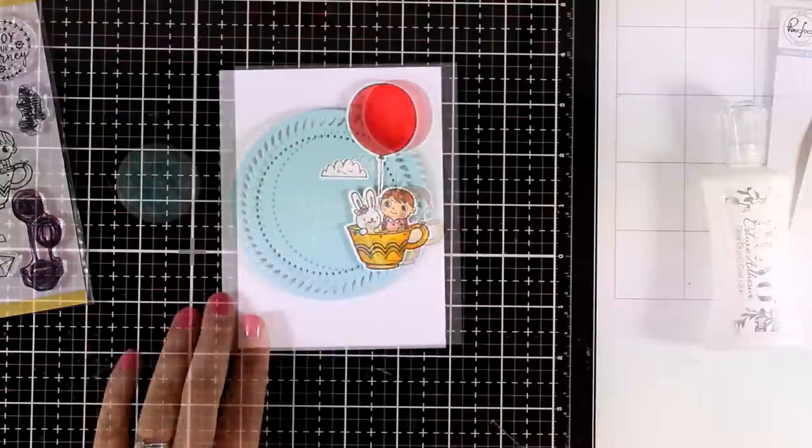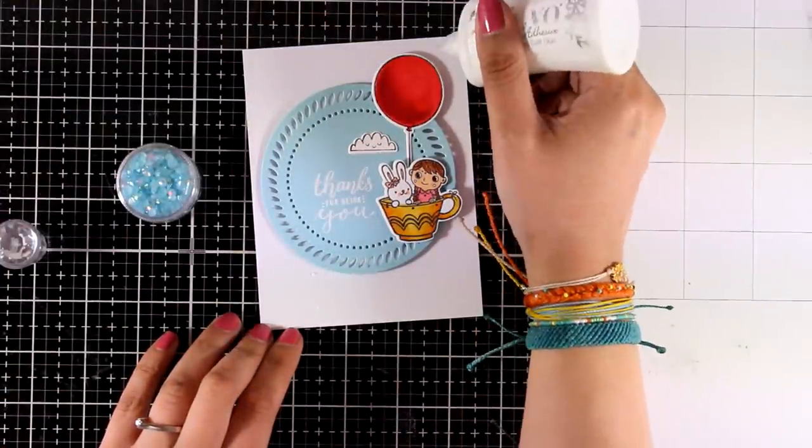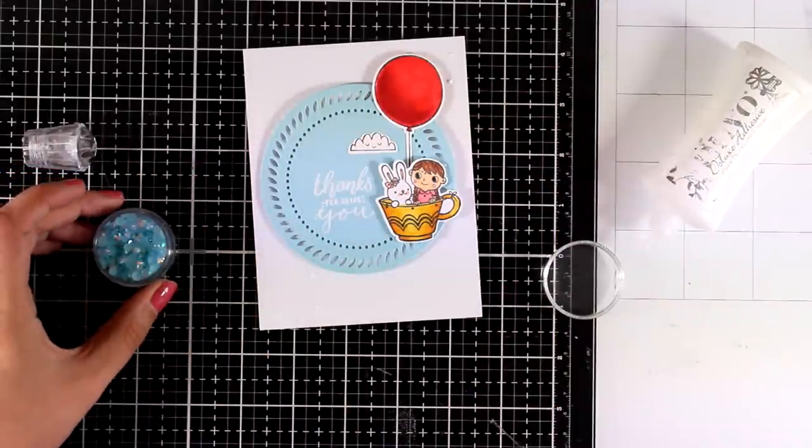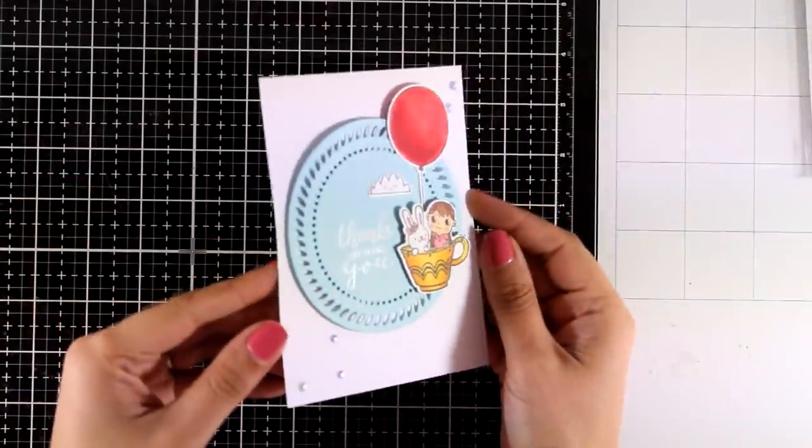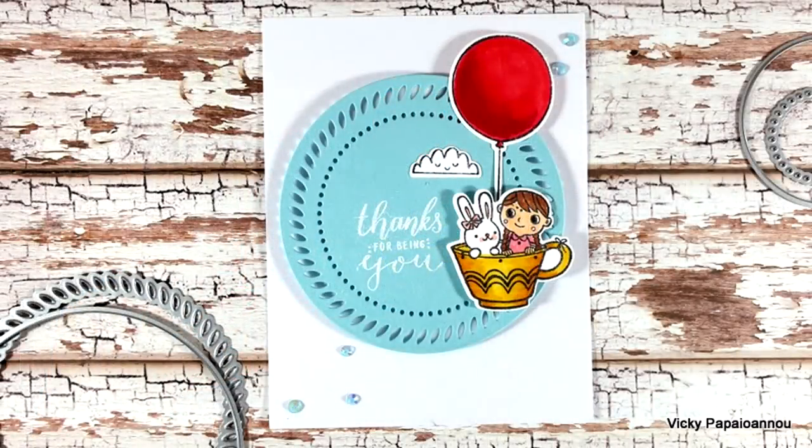For my sentiment I went with one that says 'Thanks for being you' that I white embossed at the center of my circle. The sentiment comes from another stamp set called Simply Succulents, one of my favorites from their previous releases. As always, you'll find everything I'm using linked down below in the description area. Finally, I added some of the gems in the same color as my cardstock.